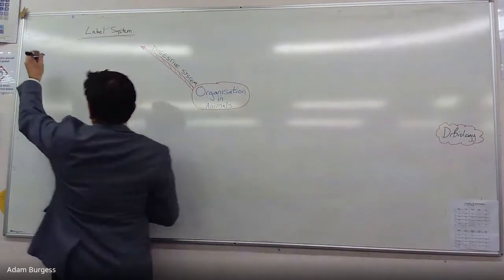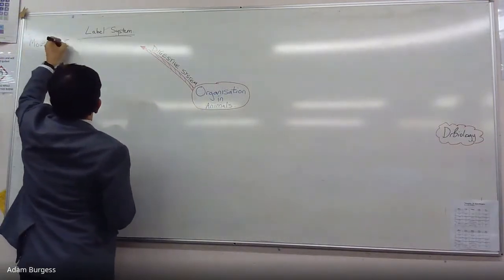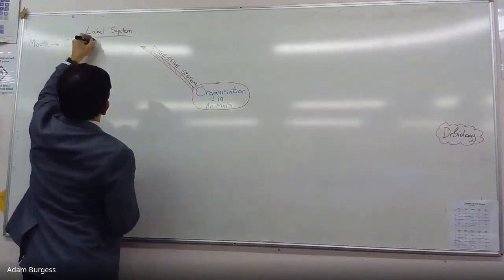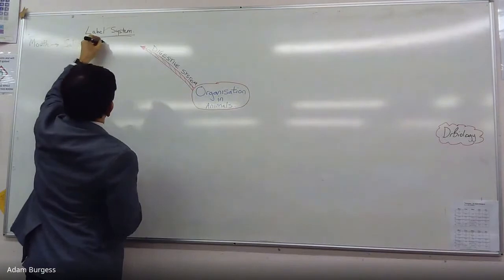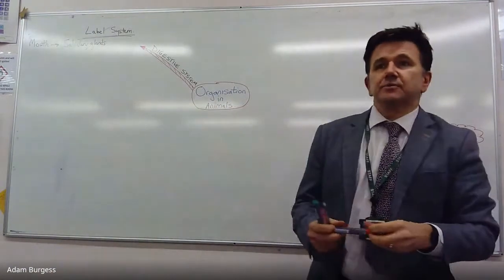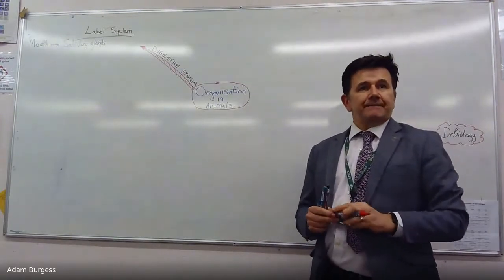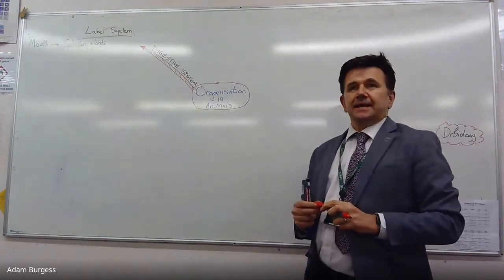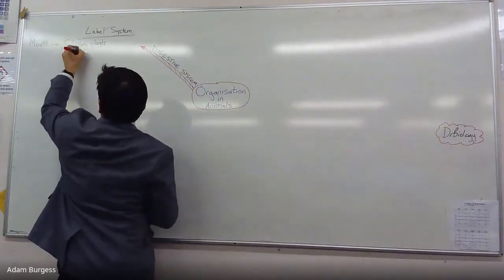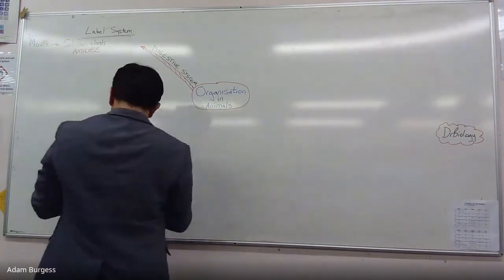It breaks down food both mechanically and chemically through the use of enzymes. In terms of the system, you start with the mouth. You've also got salivary glands. They release saliva. Can you remember what enzyme is in saliva? Amylase. Well done, amylase is present in salivary glands.